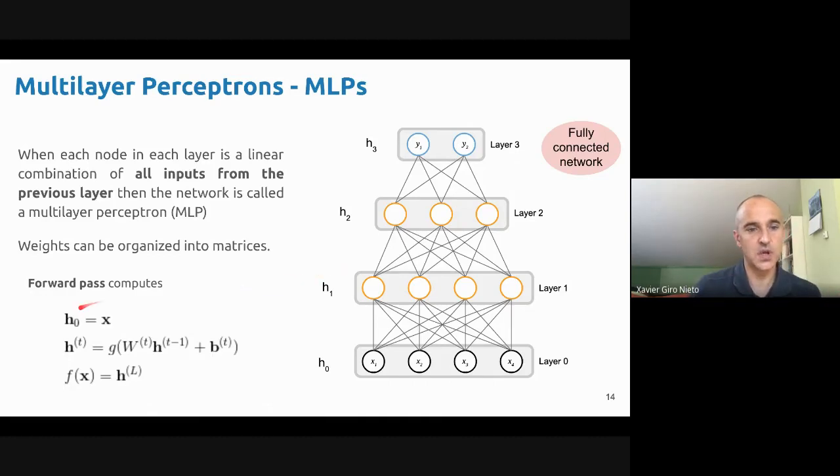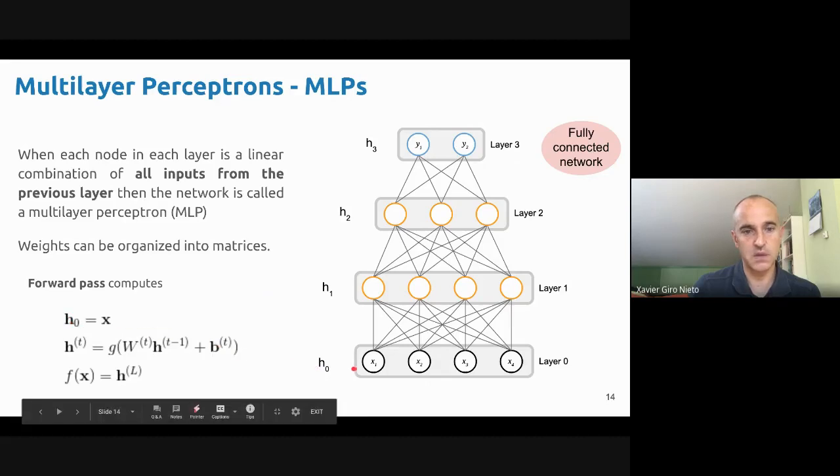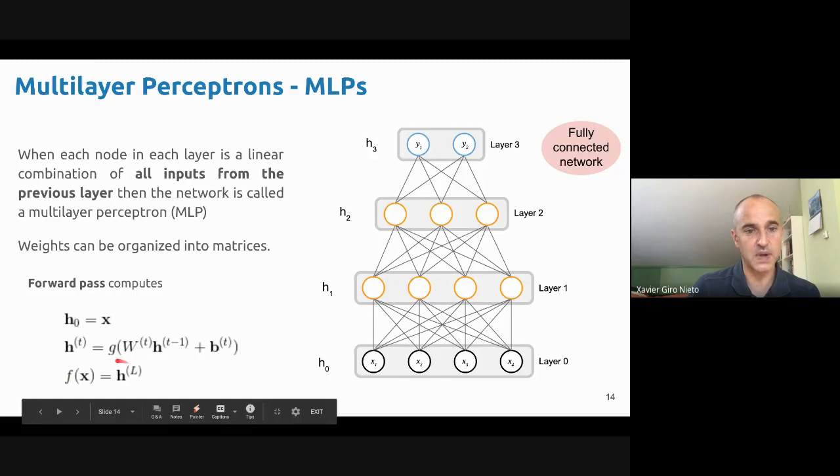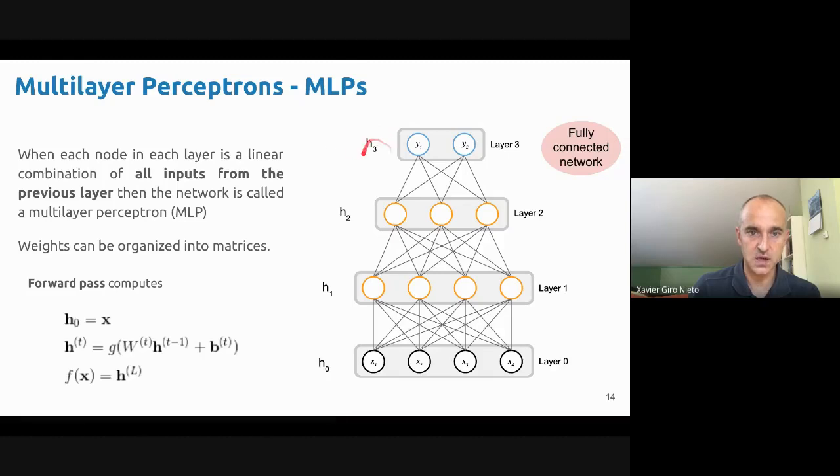In terms of notation, you can think that H is the typical notation for the hidden layers. If we name H0 for the input layer, we can express the output of each hidden layer as: the G will be the nonlinear activation, typically in deep neural networks this will be a ReLU. Then you have the hidden state of the previous layer multiplied by the weights of that layer plus the vector of bias. The function modeled by this multilayer perceptron would be the output of the last layer, which will be H of L.